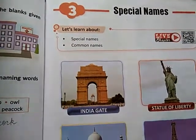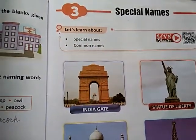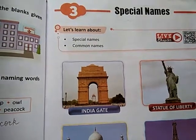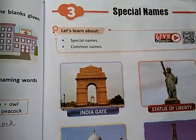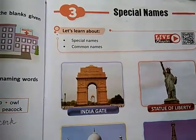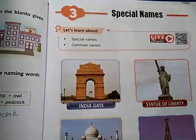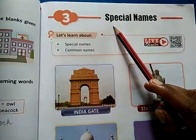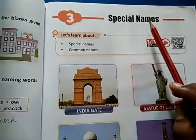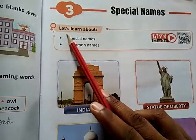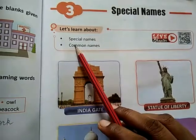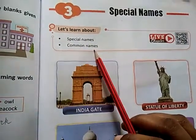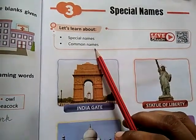Naming words mein kis-kis ke name hote hain? Kisi vyakti ke, vastu ke, sthan ke aur janvar ke — inke name hote hain bachon. Ab unhi mein se hum seekhenge special names kaun se hote hain. Is chapter mein hum seekhenge special names and common names.